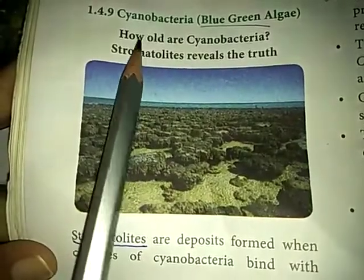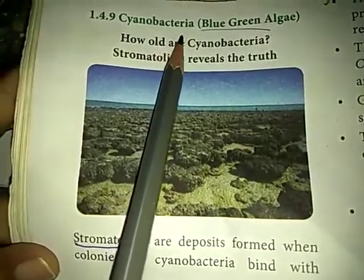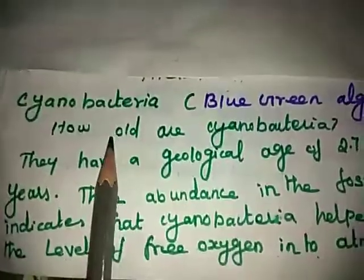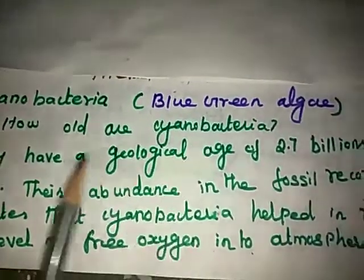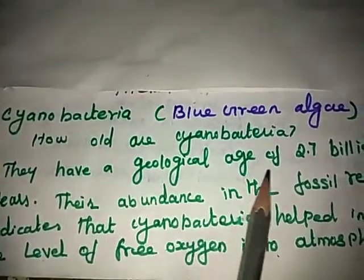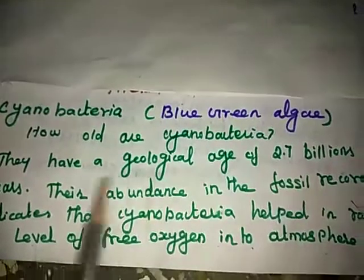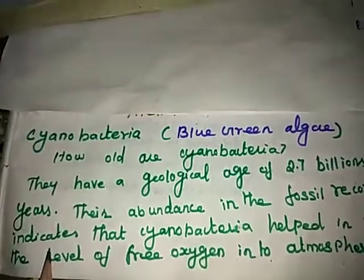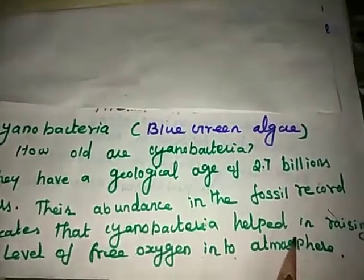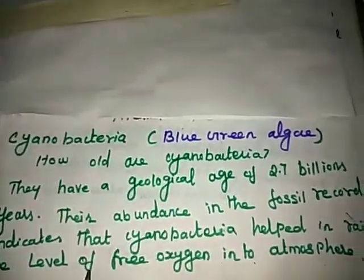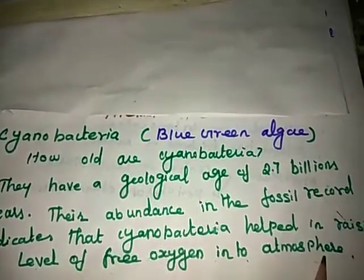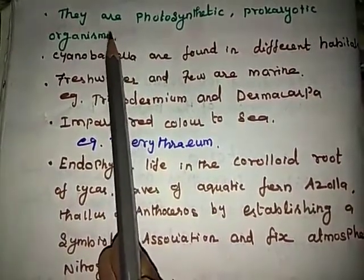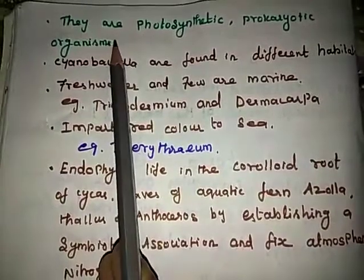Now let us see about Cyanobacteria. The Cyanobacteria are popularly known as blue-green algae. They have a geological age of 2.7 billion years. Their abundance in the fossil record indicates that Cyanobacteria helped in raising the level of free oxygen in the atmosphere.